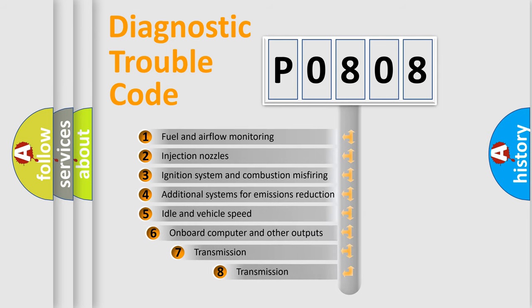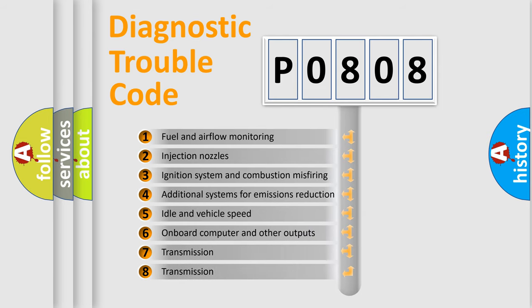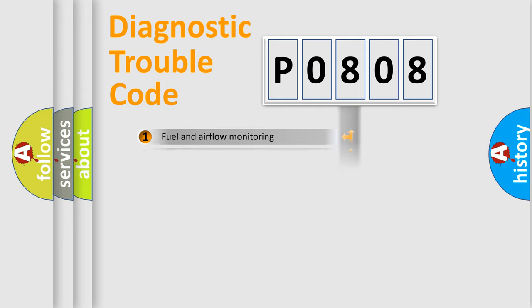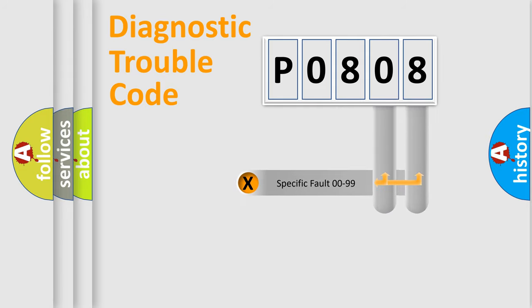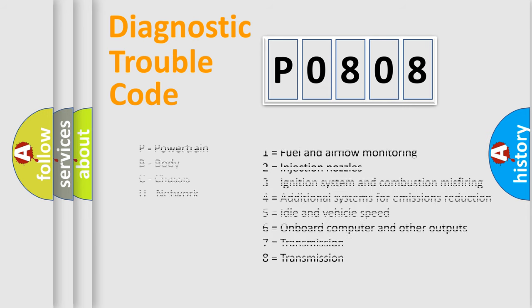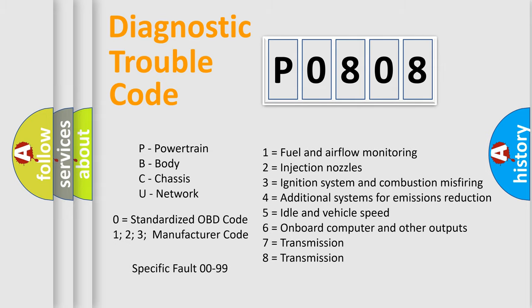The third character specifies a subset of errors. The distribution shown is valid only for the standardized DTC code. Only the last two characters define the specific fault of the group. Let's not forget that such a division is valid only if the second character code is expressed by the number zero.